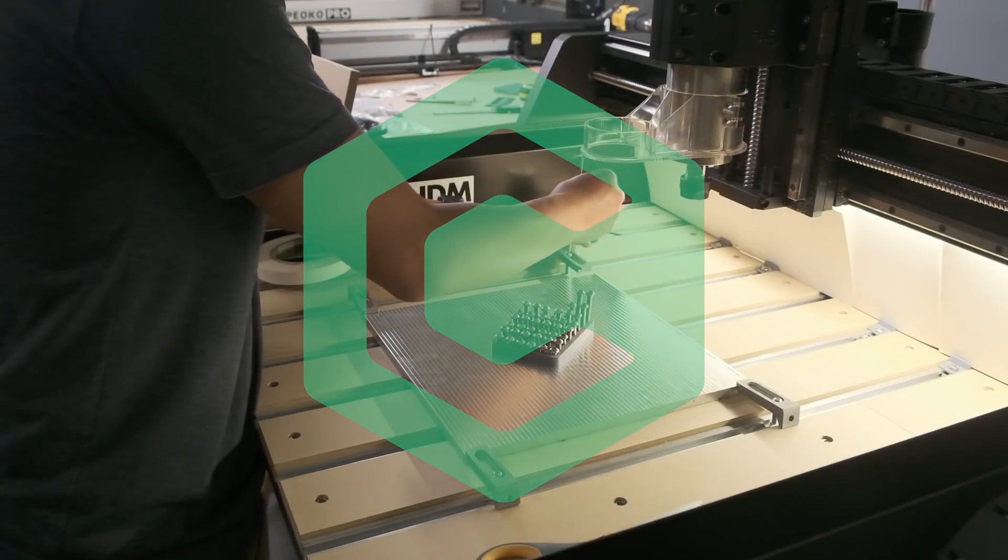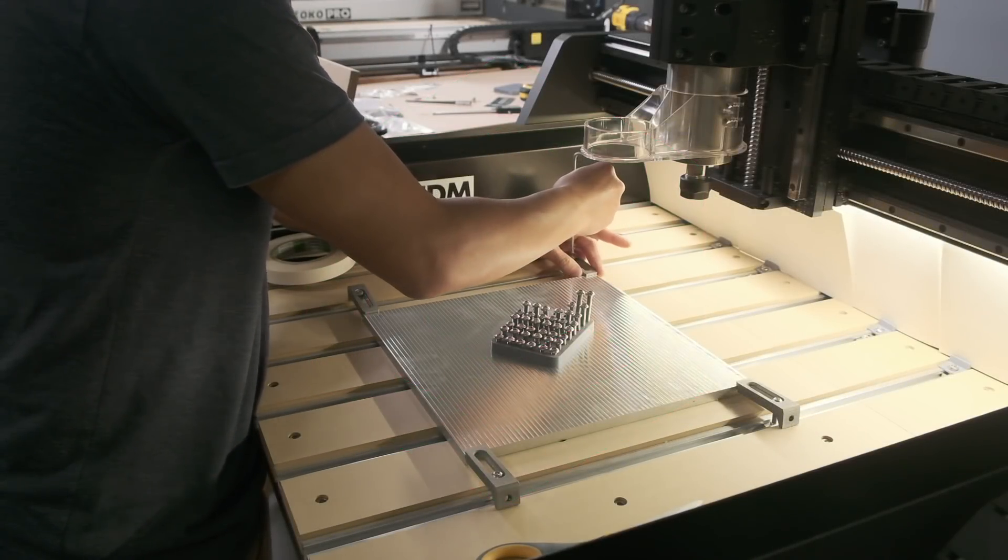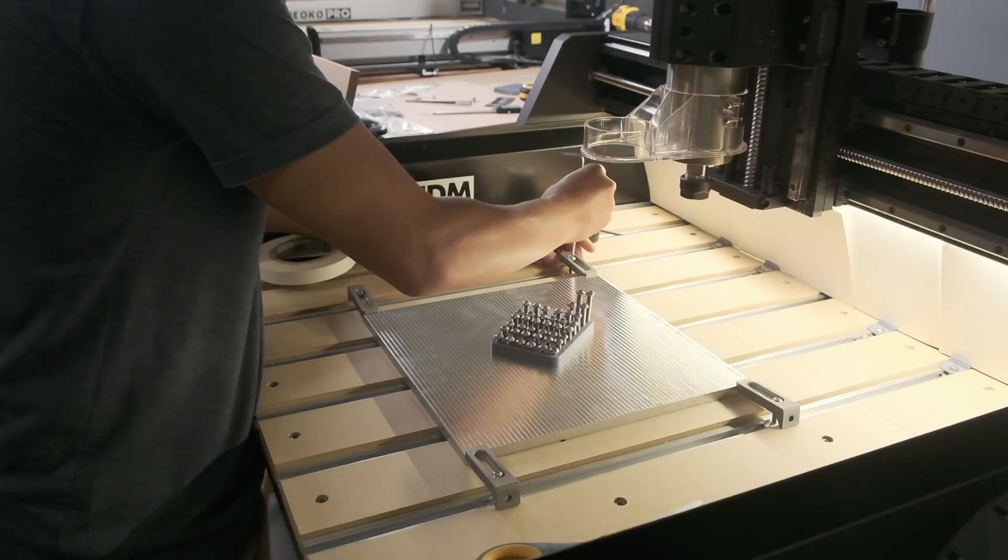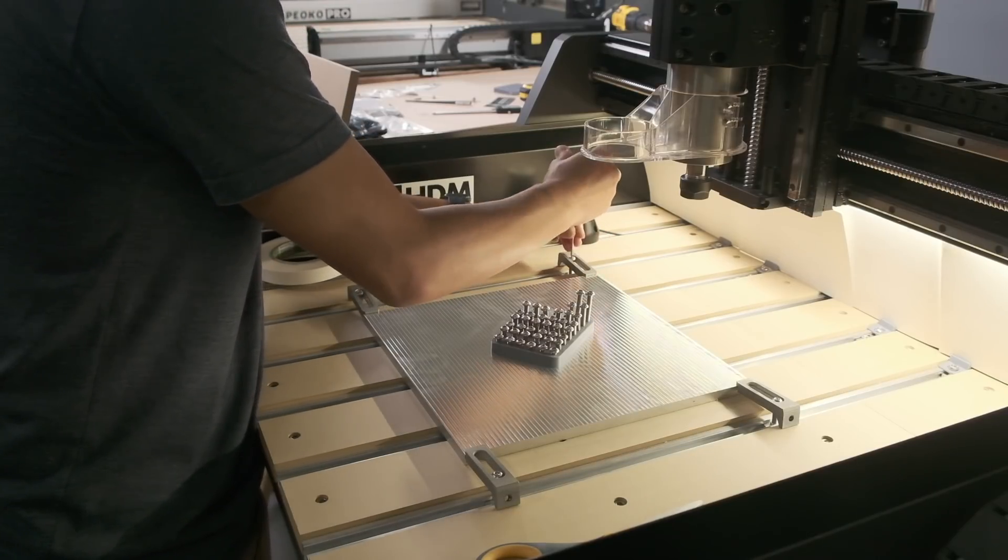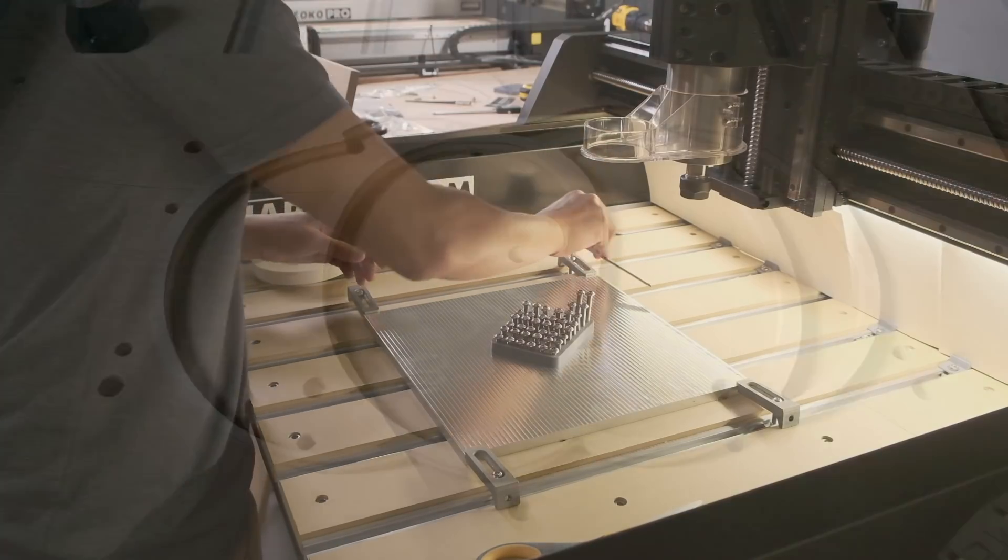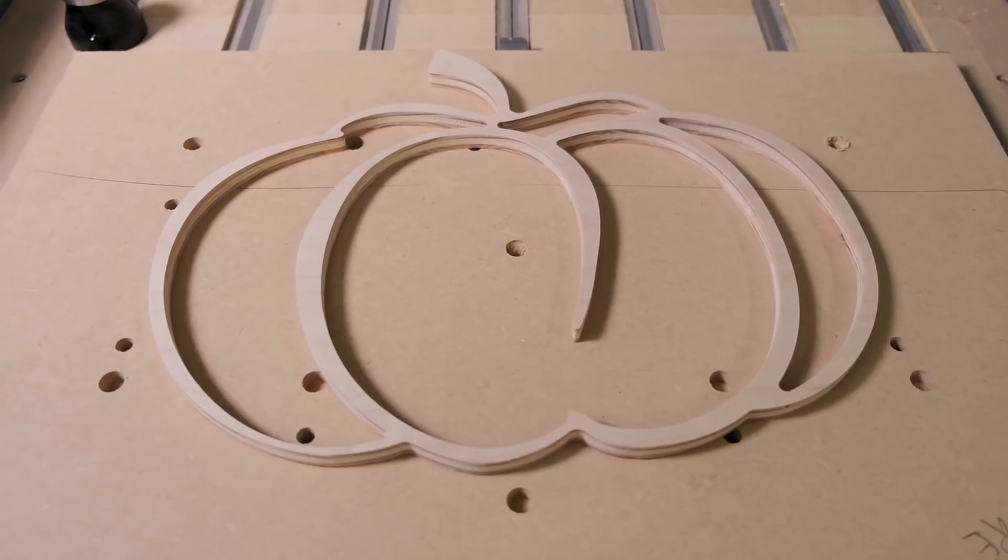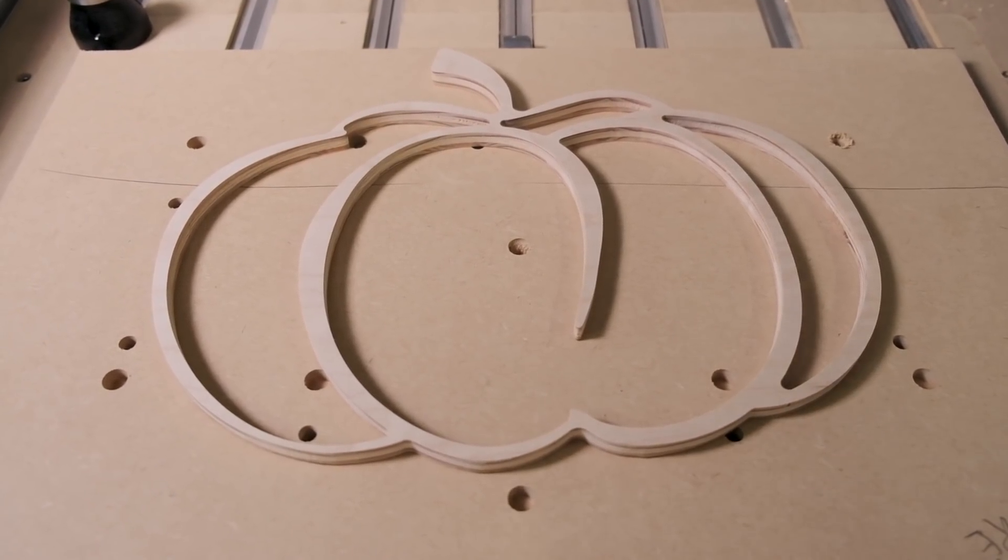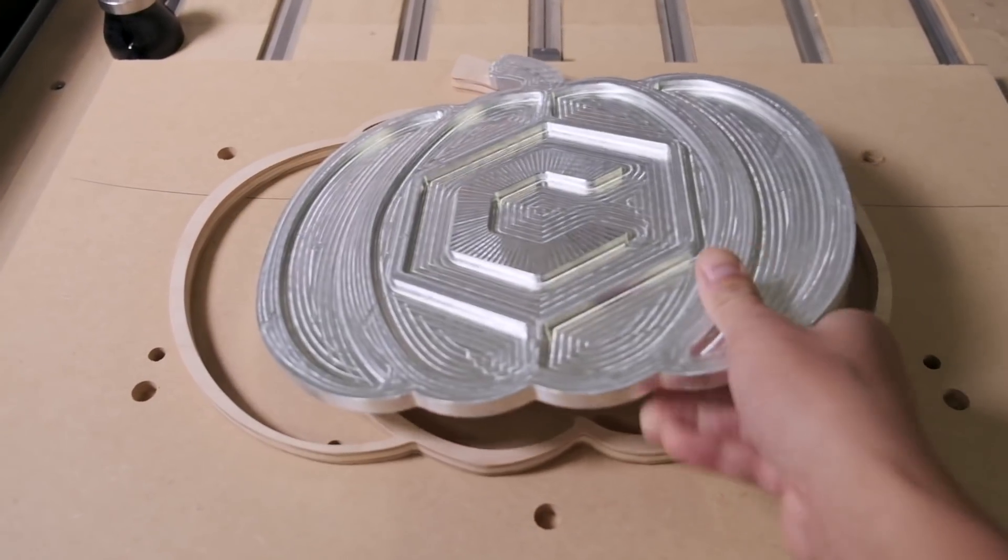Hey folks, Winston for Carbide3D here. Fall is coming and our prototype HDM is in dire need of some exercise, so I'm going to machine a pumpkin. But not a real pumpkin, and not like this lame plywood one that I made last year. I want a full metal pumpkin.